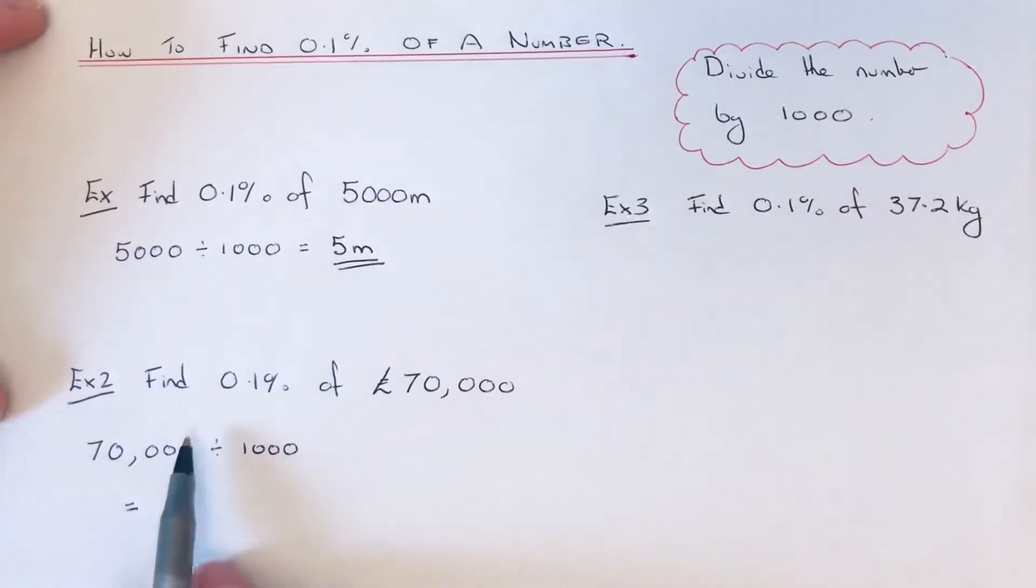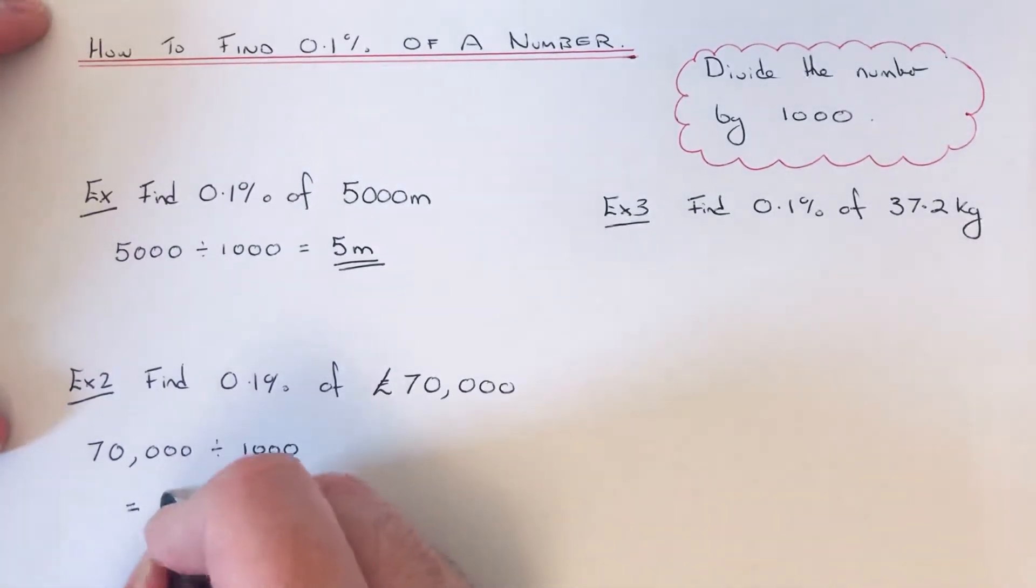This time we have three zeros at the end that we can just take off. If you're having trouble, divide by 1,000. That will give an answer of 70 pounds.